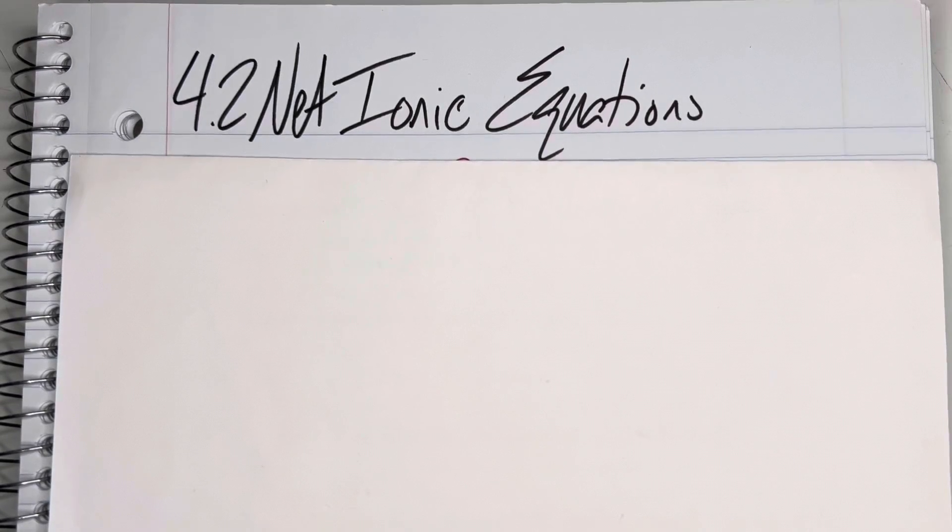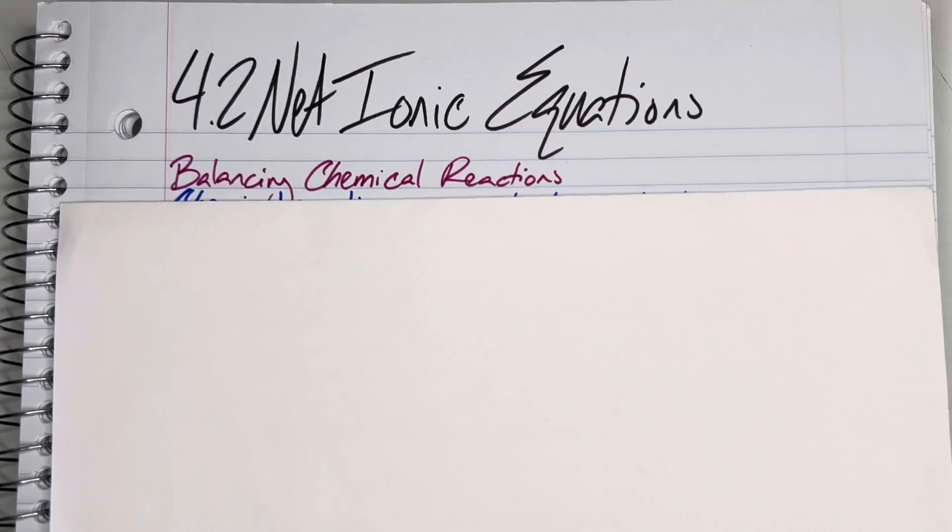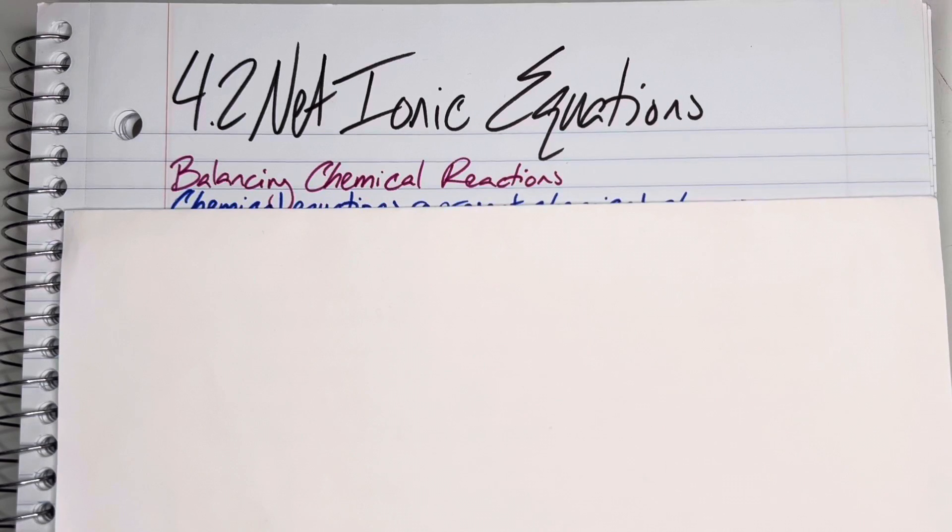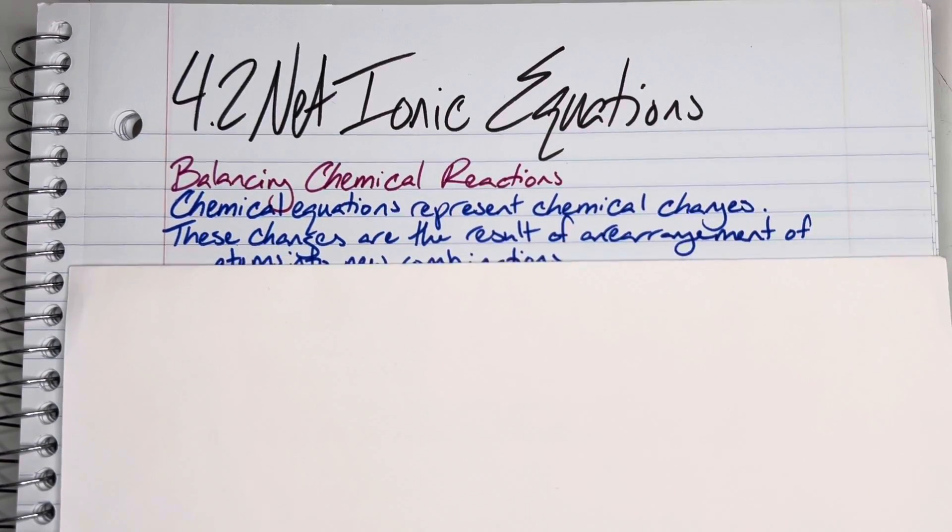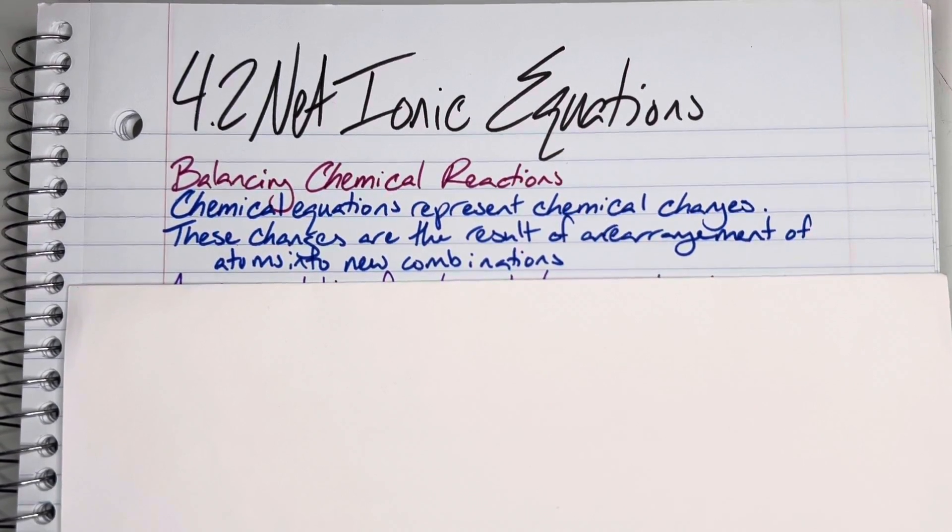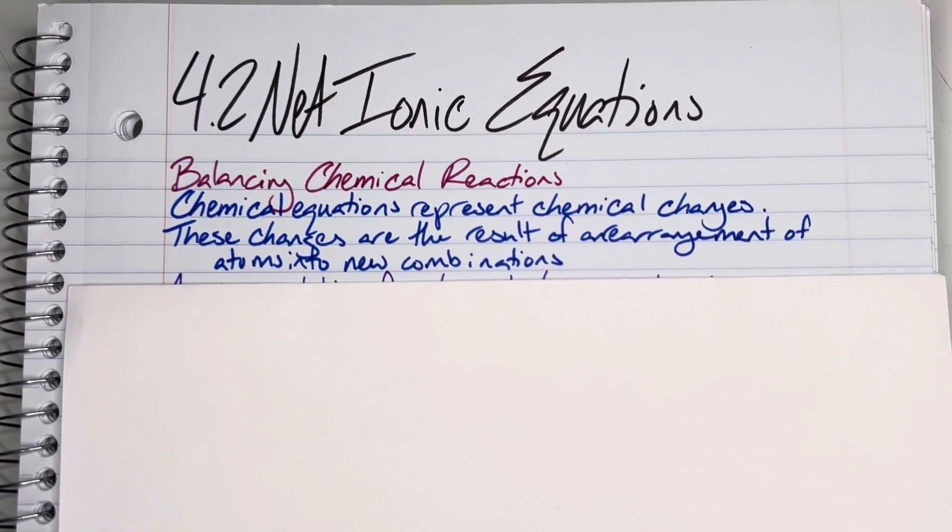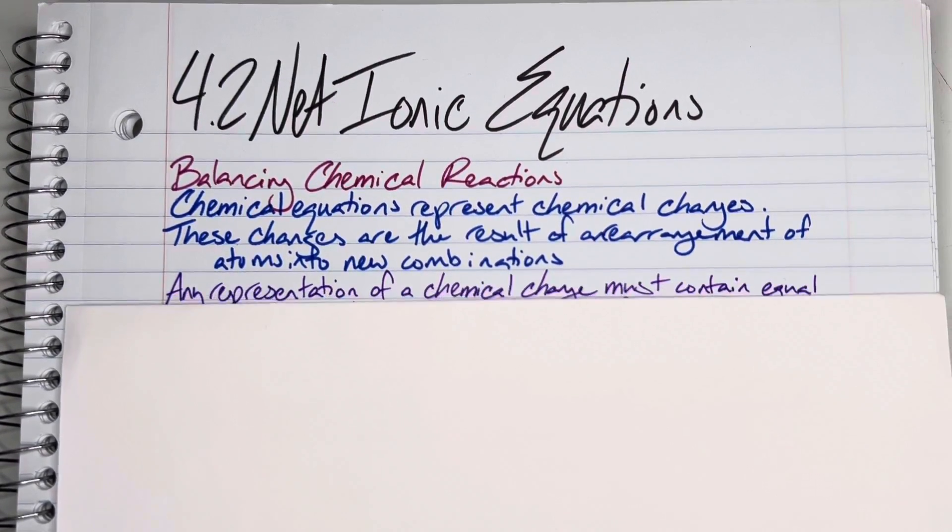AP Chemistry Unit 4.2: Net Ionic Equations. We need to balance chemical reactions. Chemical equations represent chemical changes, and those changes are a result of the rearrangement of atoms into new combinations.